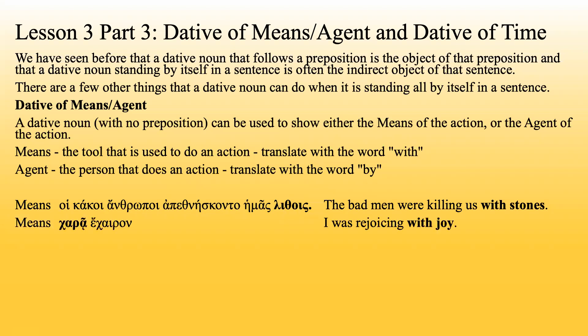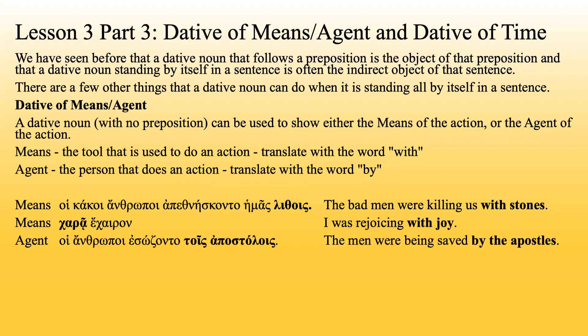Chaire e chairan — 'I was rejoicing with joy.' Joy is the tool that I was using to rejoice. A little bit of a silly sentence, but it can be a sort of non-physical tool as well.